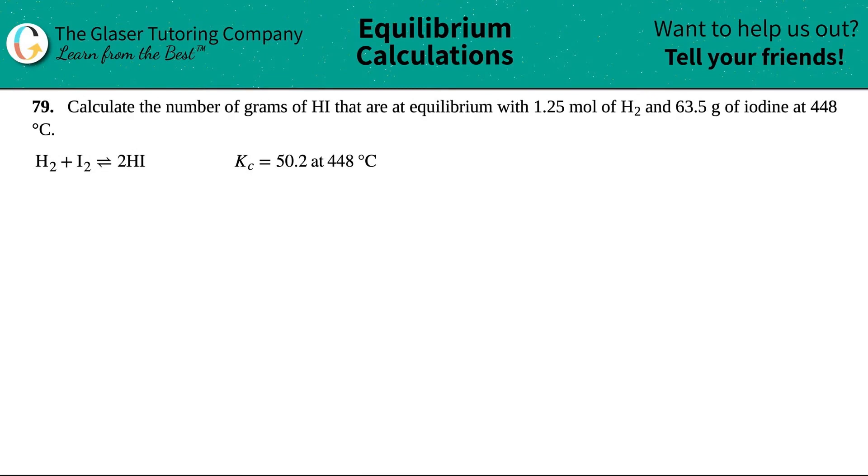Number 79. Calculate the number of grams of HI that are at equilibrium with 1.25 moles of H2 and 63.5 grams of iodine at 448 degrees Celsius. Okie dokie. So looks like they gave me an equation here so I'm just going to rewrite it a little bit bigger. So we have H2 plus I2 is coming to equilibrium with 2HI. I already see a coefficient so I'm going to assume that this is balanced and this is a balanced equation.